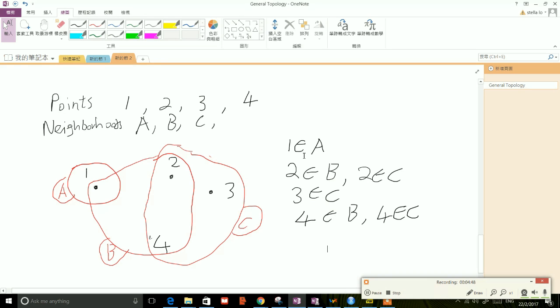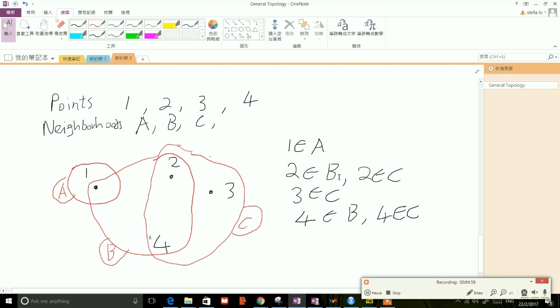And I've written logically on the right-hand side the relationships between these points and the neighborhoods. So I've written like point one is in neighborhood A, point two is in neighborhood B.